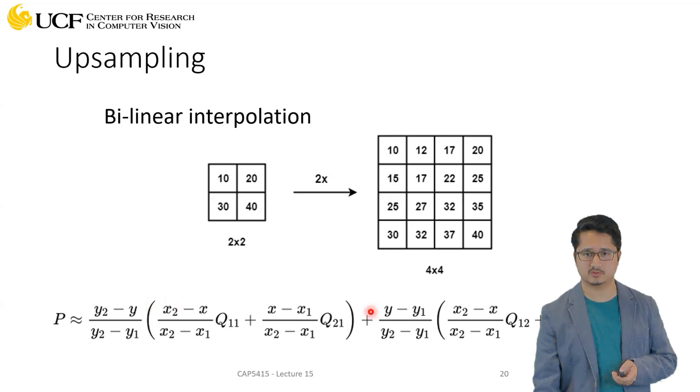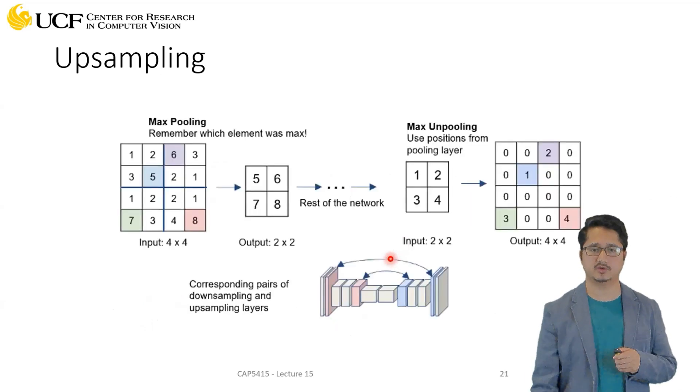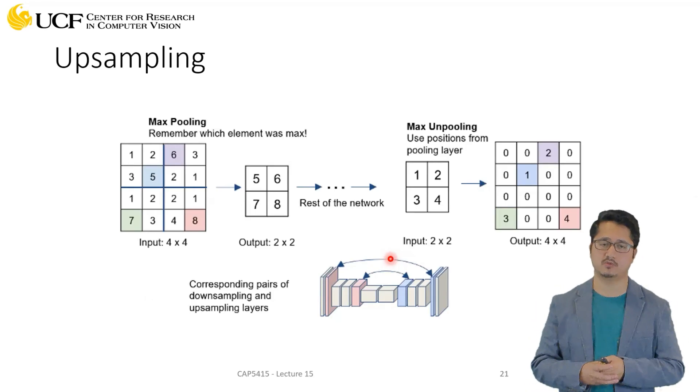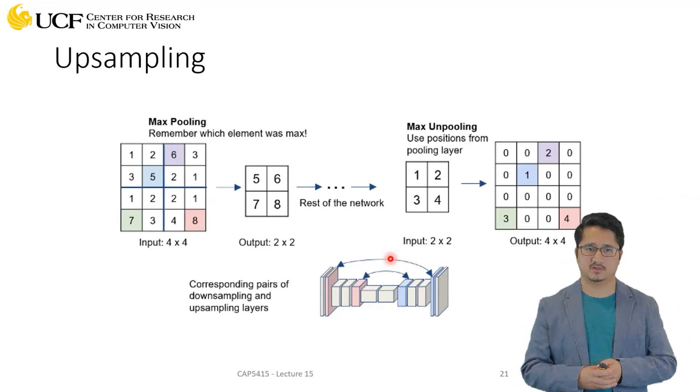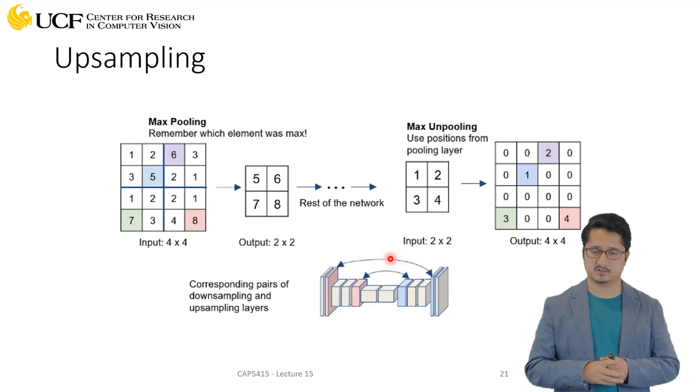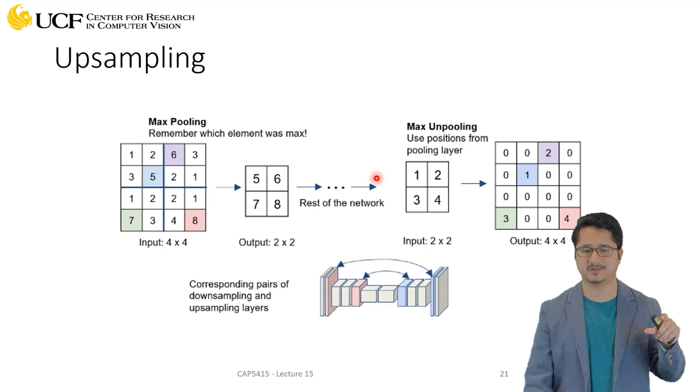Now, the other upsampling technique which I was talking about is max unpooling, and this is also very interesting. This I think was the approach which was used for the first convolution network when it was used for semantic segmentation.